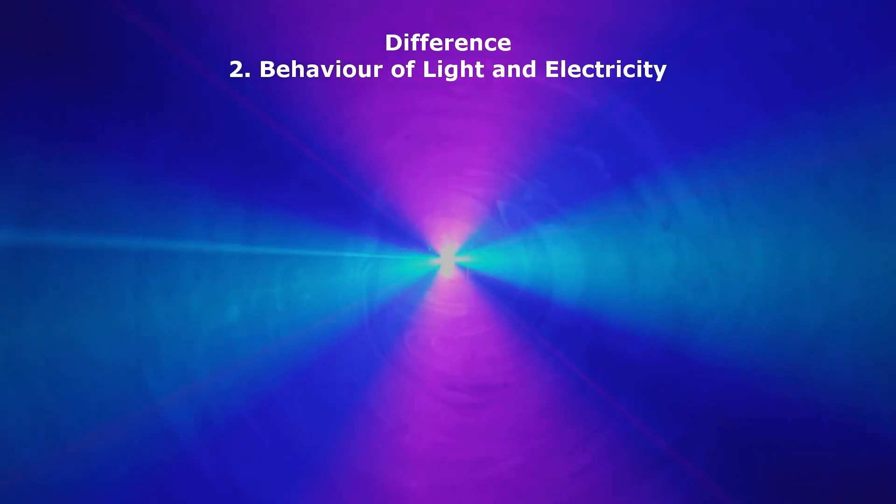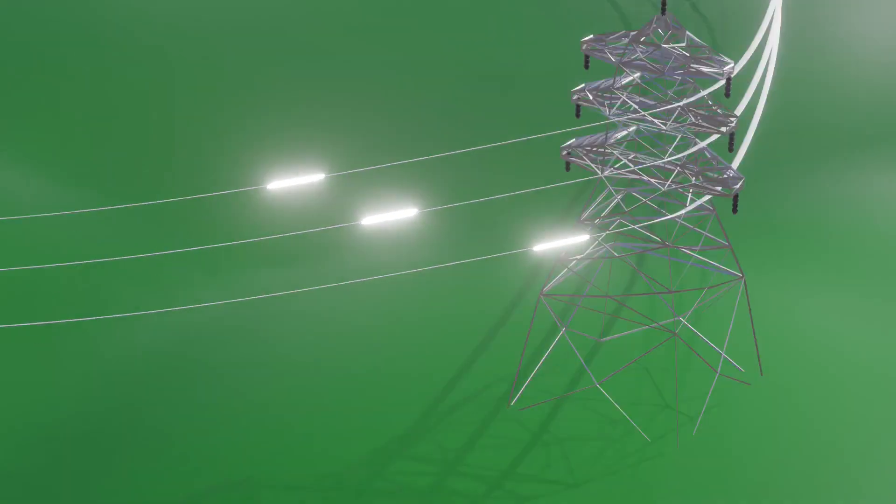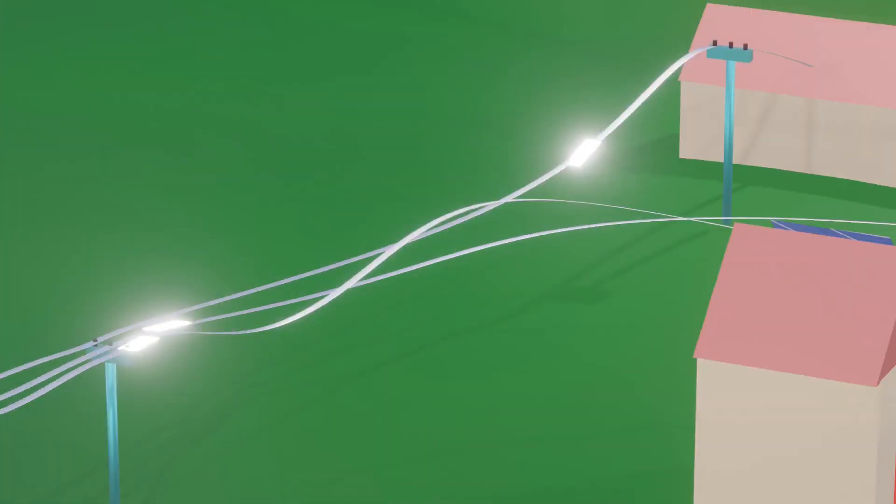Another difference between light and electricity is the way they behave. Electricity flows through a conductor and can be controlled and redirected using switches and circuits. On the other hand, light travels in a straight line and cannot be easily controlled or redirected.